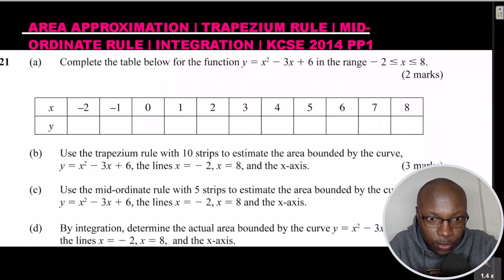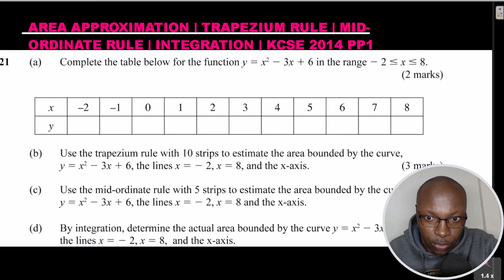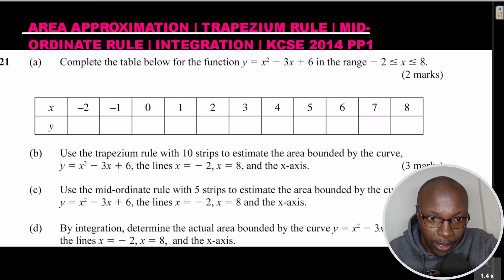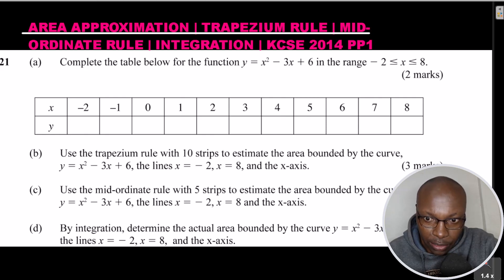Welcome. Let's solve this question on area approximation: the trapezium rule, mid-ordinate rule, and the use of integration in approximating the area. This is KCC 2014, Paper 1, Question number 21, Part A. Complete the table below for the function y = x² - 3x + 6, from negative 2 to 8.